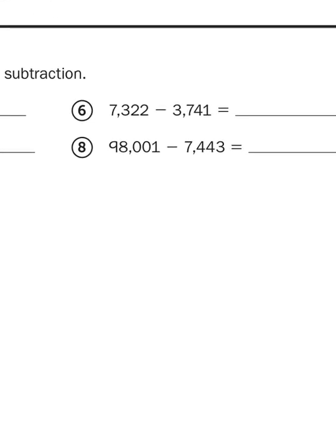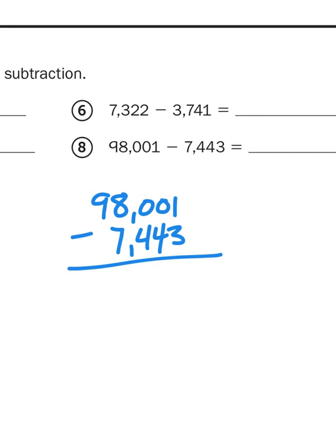98,001 minus 7,443. So it's subtraction. So let me rewrite that vertically so that I can line up my place values, because I can't subtract knowing that I might have to do some regrouping if my problems aren't lined up by place value.